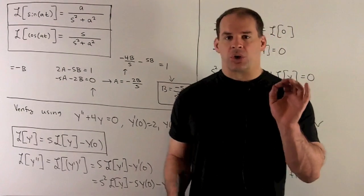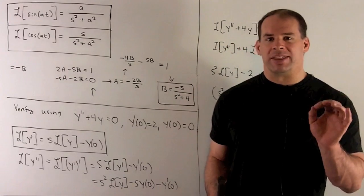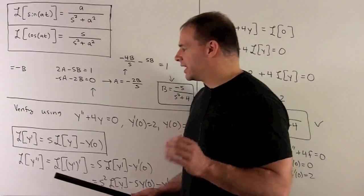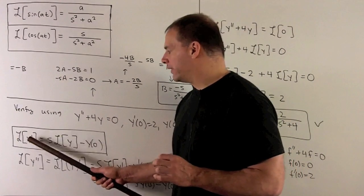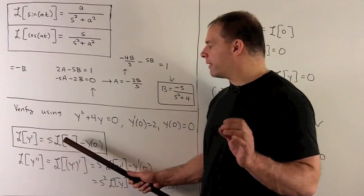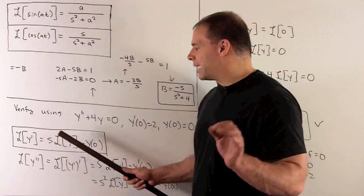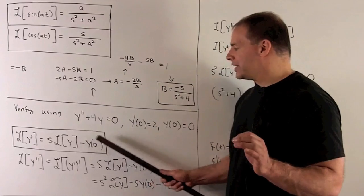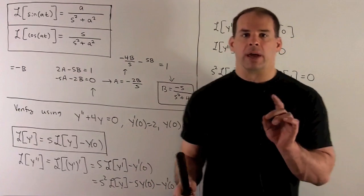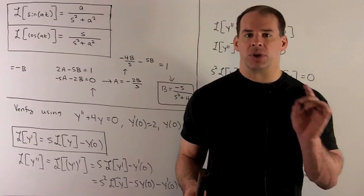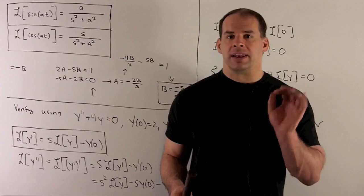What's going to drive our solution here is going to be this identity. We're going to have that if I take the Laplace transform of a derivative, you're going to get Laplace transform of your original function times s minus y0. So I show this in another video. Here we're just going to assume it.